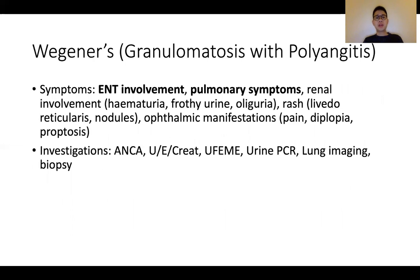Granulomatosis with polyangiitis, previously known as Wegener's — the key things to note are, number one, these patients often have ENT involvement, sometimes pulmonary symptoms too, and renal involvement. A patient who comes in with pulmonary-renal syndrome, or someone who comes in with a rapidly progressive glomerulonephritis picture — Wegener's is something to consider. They can get other features such as rash or ophthalmic manifestations, but the key symptoms are ENT involvement. They can get long-term or very severe sinusitis, pulmonary involvement coming in with haemoptysis, pulmonary symptoms such as breathlessness, or even pulmonary haemorrhage, and renal involvement. Investigations-wise: ANCA — this is an ANCA-positive vasculitis — renal investigations, urine investigations, lung investigations, as well as biopsy of the affected organs.